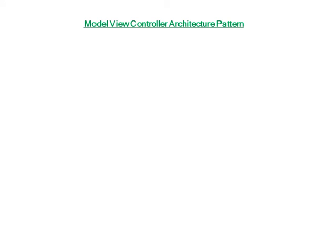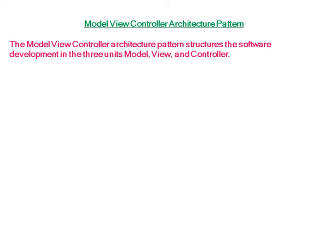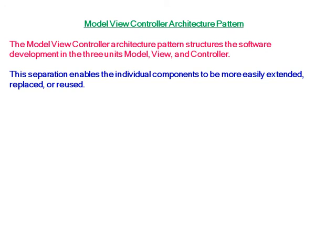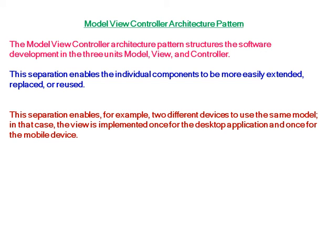Model-View-Controller architecture pattern. The MVC architecture pattern structures software development into three units: Model, View, and Controller. This separation enables the individual components to be more easily extended, replaced, or reused. It also enables, for example, two different devices to use the same model — in that case the view is implemented once for the desktop application and once for the mobile device.